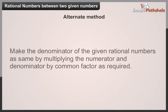Alternate method: Make the denominator of the given rational numbers the same by multiplying the numerator and denominator by a common factor as required.